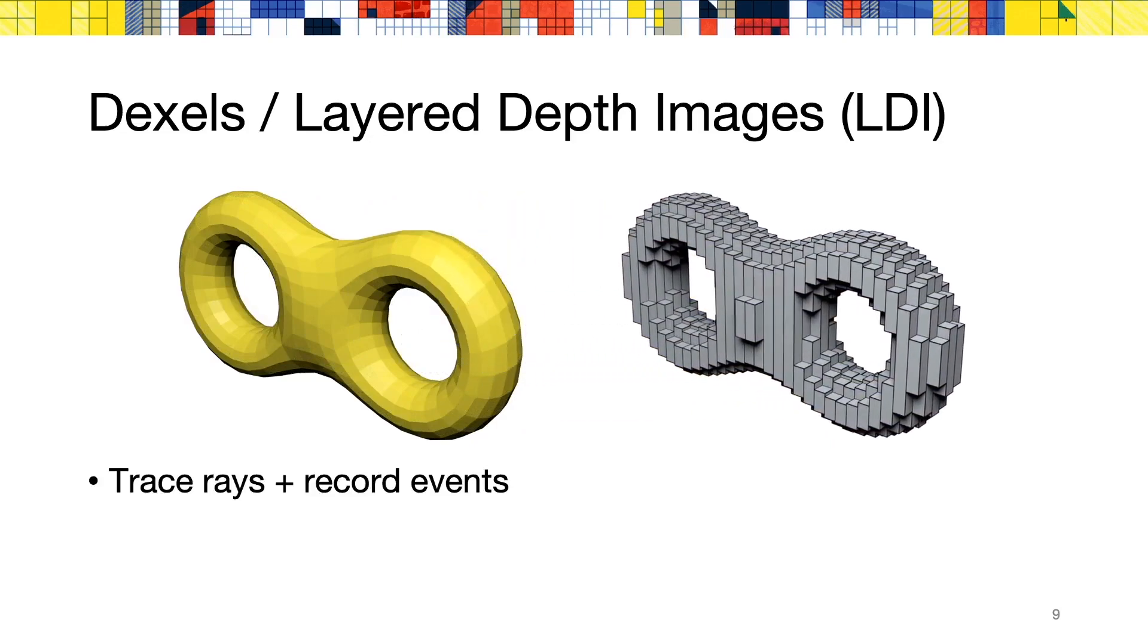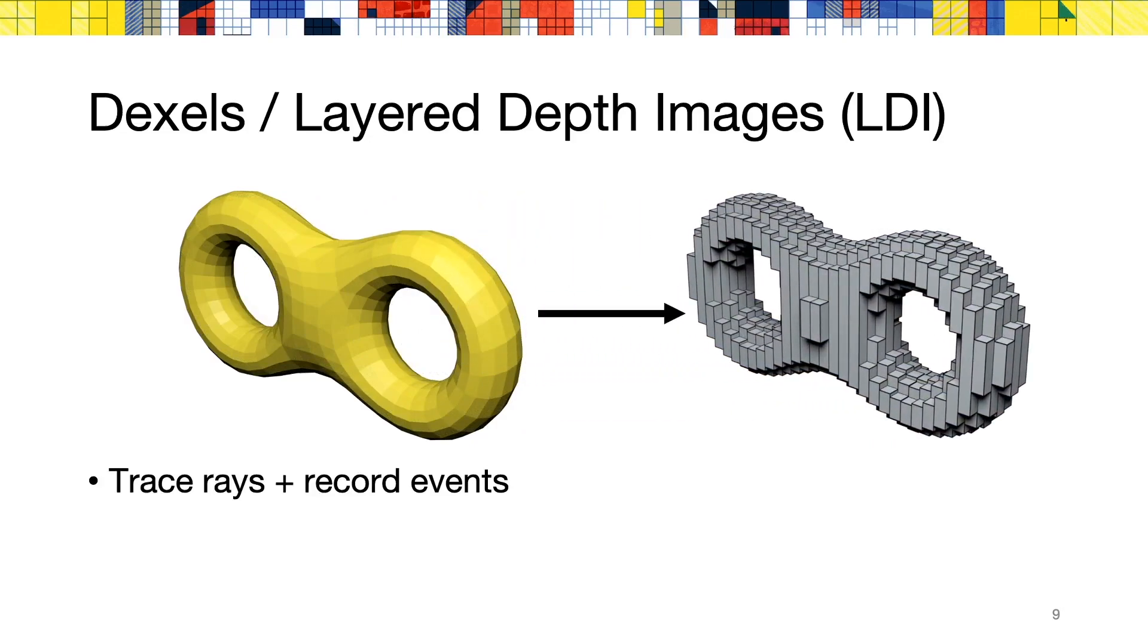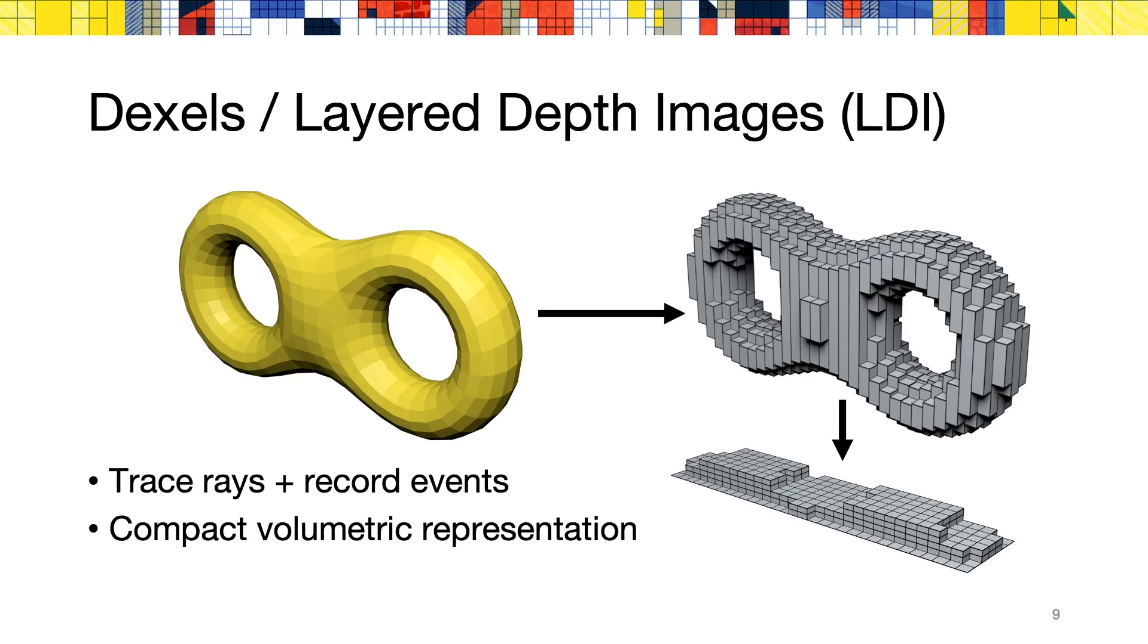Conceptually, if you throw a bunch of orthogonal arrays on your shape and record the intersection events in and out, you will end up with a discrete representation of the volume, which can be stored compactly in a 2D array at the desired resolution. This representation is often more compact than a voxel grid, and slightly more costly than a 2D image.